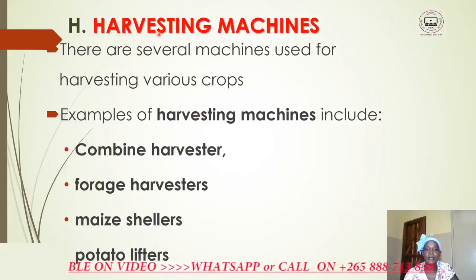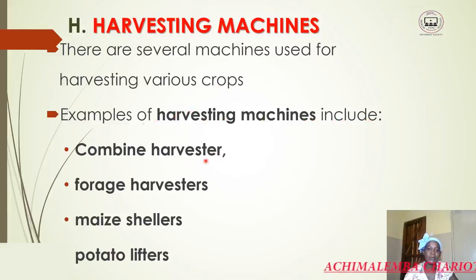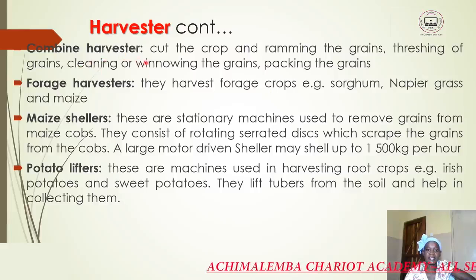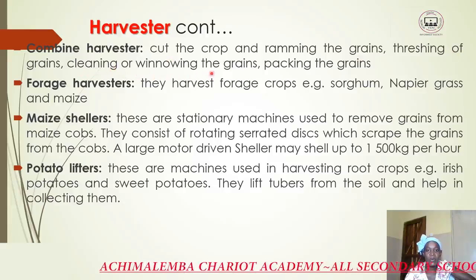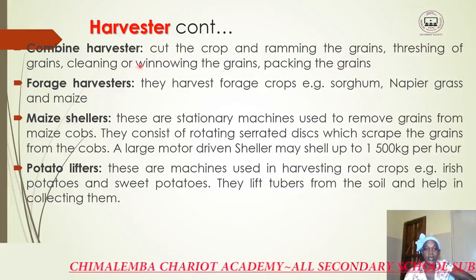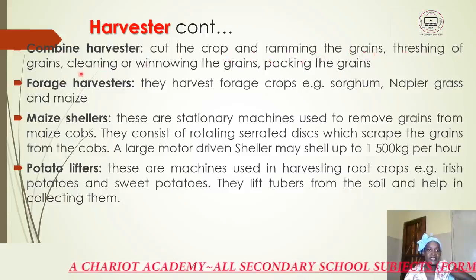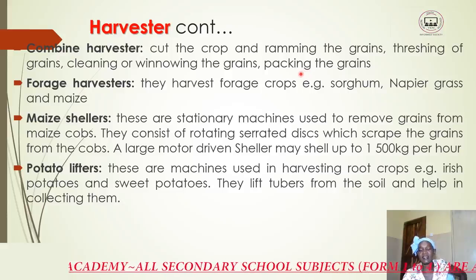Apart from cultivators, tractor-drawn implements also include harvesting machines. There are several machines used for harvesting various crops, including the combine harvester, forage harvester, maize sheller, and potato lifters. The combine harvester cuts the crop, threshes off the grains, cleans or winnows the grains, then packs the grains into bags.